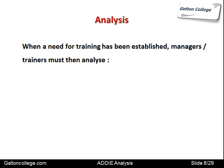When a need for training has been established, managers and trainers must then analyze the goals of the business to see where it's aiming — to see if the identified training needs are absolutely required or merely peripheral. There may be a skills gap, but the company can live with it. However, if the skills gap relates to something central to the focus of the business and will enable it to better achieve its goals, then a training program is required.